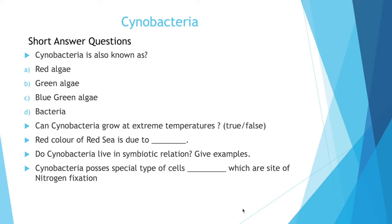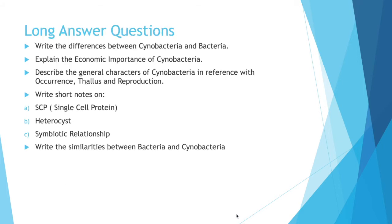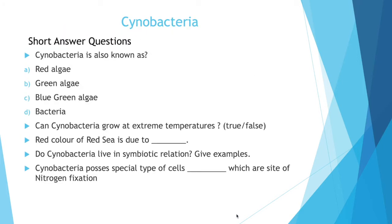So our first question is cyanobacteria is also known as A. Red Algae, B. Green Algae, C. Blue Green Algae and D. Bacteria. So the answer of this question is Blue Green Algae.